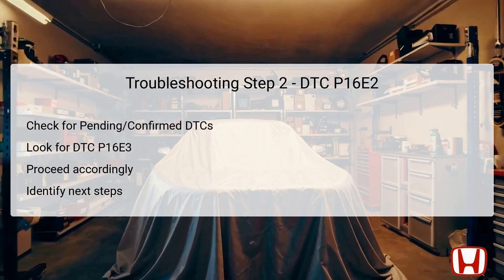Once you've checked for pending or confirmed DTCs using the HDS, specifically look for DTC P16E3, which indicates a problem related to the battery sensor LIN communication error. If this specific code is indicated, it means that further investigation into the battery sensor or LIN circuit is needed, leading to the next troubleshooting steps. If DTC P16E3 isn't shown, redirect to subsequent steps to assess other potential issues that may relate to the original P16E2 error. Take note of any additional DTCs, as they can provide crucial clues into the underlying problem.